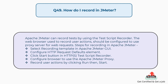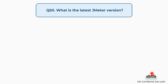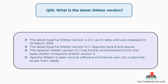Question 49: How do I record in JMeter? Apache JMeter can record tests using the Test Script Recorder. The web browser should be configured to use a proxy server for web requests. Steps: first, select the Recording Template in JMeter GUI; second, configure HTTP Request Defaults element; third, click Start in the HTTP/S Test Script Recorder; fourth, configure the browser to use the JMeter proxy; fifth, record user actions by clicking Run then Start.